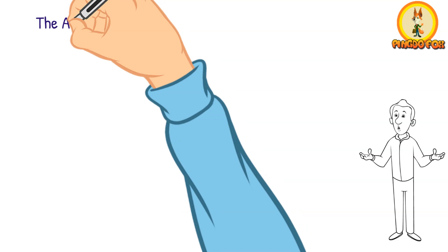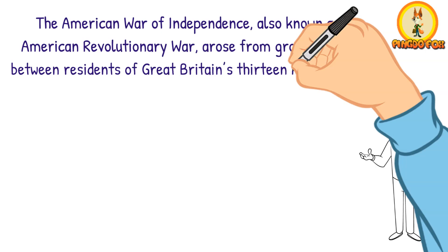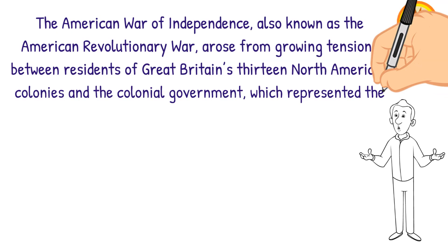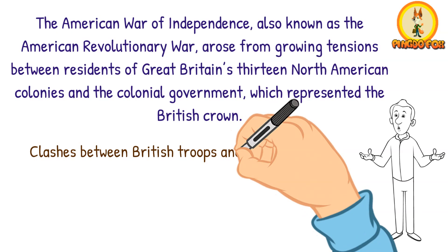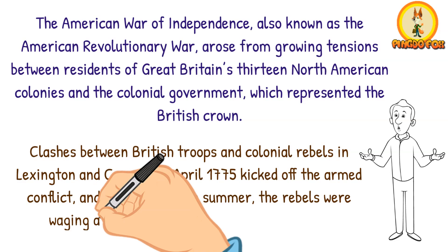The American War of Independence, also known as the American Revolutionary War, arose from growing tensions between residents of Great Britain's 13 North American colonies and the colonial government, which represented the British Crown. Clashes between British troops and colonial rebels in Lexington and Concord in April 1775 kicked off the armed conflict, and by the following summer, the rebels were waging a full-scale war for their independence.